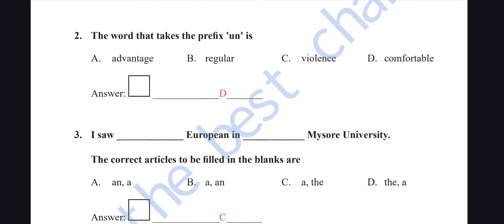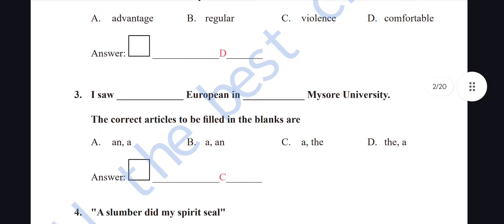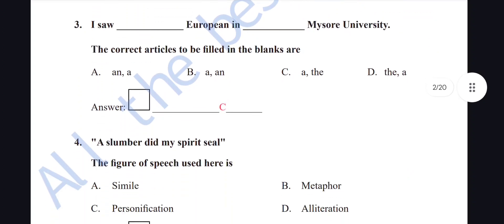The word that takes the prefix 'un' — we can't write 'unadvantage' or 'unregular.' You have to try each word and check whether it sounds correct and has a meaning. 'Unviolence' — no. 'Uncomfortable' — yes. So the answer for the second question is D: uncomfortable.